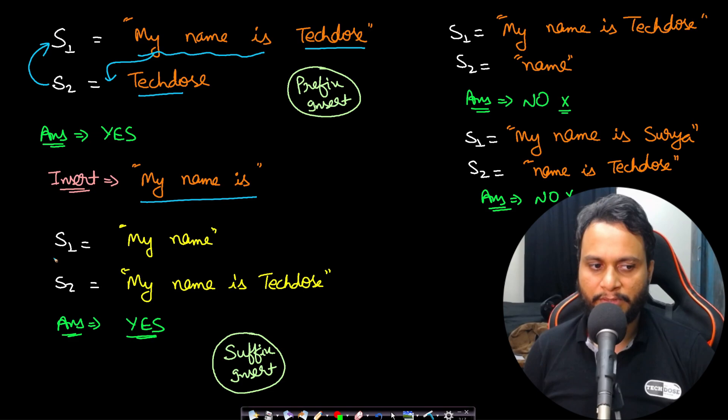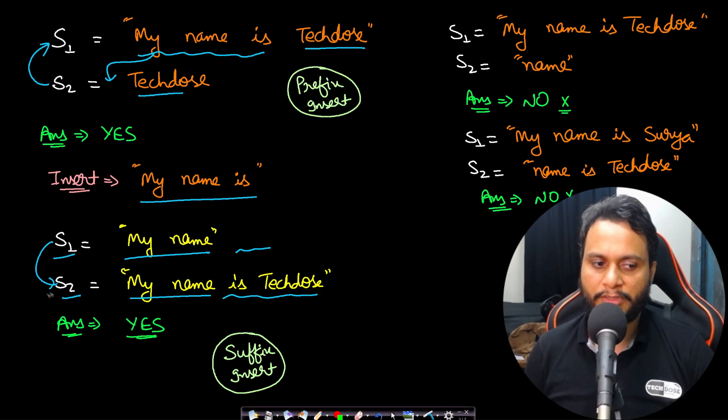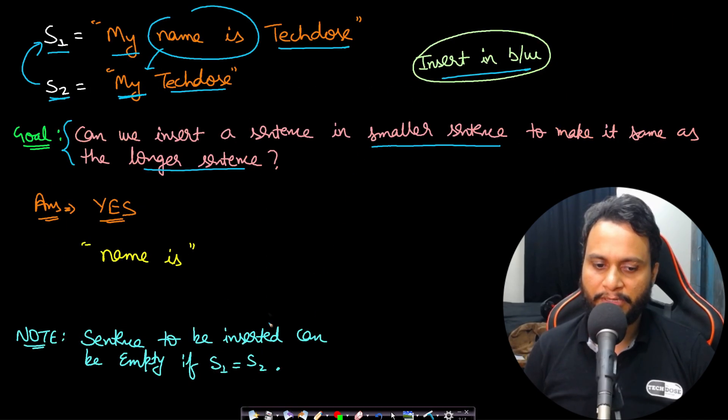Now let's look at another example. S1 is 'my name' and S2 is 'my name is TakeDose'. In this case, S1 is smaller. 'My name' is already present in the beginning, so there is a prefix match. We need to do a suffix insert of 'is TakeDose' at the end of S1 to make S1 equal to S2. So these are the cases of prefix insert and suffix insert. We have already seen the case of insertion in the middle.